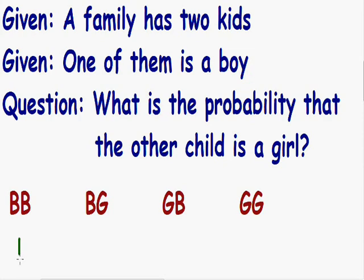Combination 1 is when you have two boys. Combination 2 is when you have a boy, then a girl. Combination 3 is when you have a girl and a boy. And combination 4 is when you have two girls.